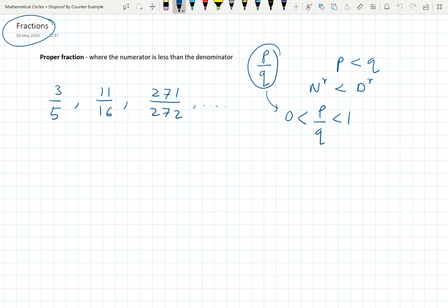Obviously, in proper fractions, if we write the decimal expansion, then the integer part will be 0. You write decimal expansion, it will be 0 point something. For example, if I write 3 by 5 in decimal expansion, it will be 0.6.